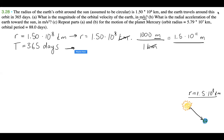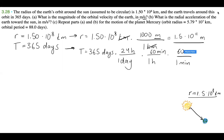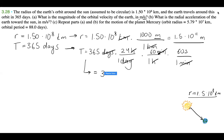And for time: 365 days, multiplied by 24 hours per day, then 60 minutes per hour, then 60 seconds per minute — the days, hours, and minutes all cancel out — gives us 365 times 24 times 60 times 60, which equals 31,536,000 seconds in a year.